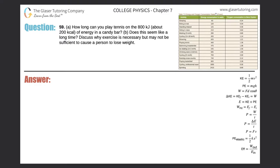Number 59 letter A: How long can you play tennis on the 800 kilojoules, about 200 kilocalories, of energy in a candy bar? Let's take a look at the table in the upper right and find where tennis is. Playing tennis, you're going to be consuming energy at a rate of 440 watts.